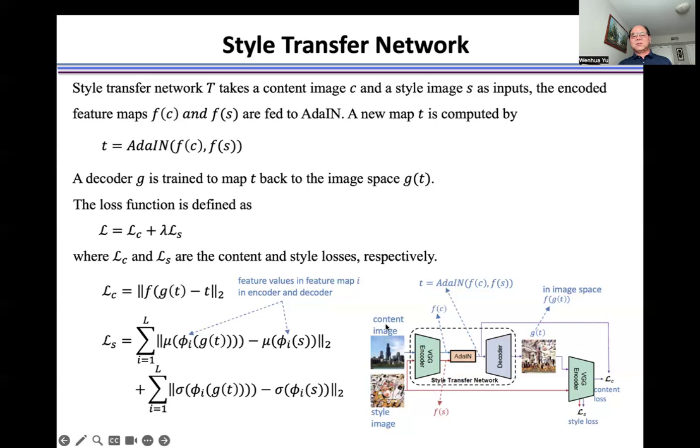First, the content and style images generate encoded features f(C) and f(S). AdaIN uses these to generate map t. The decoder uses t as input to generate the synthesized image g(t).